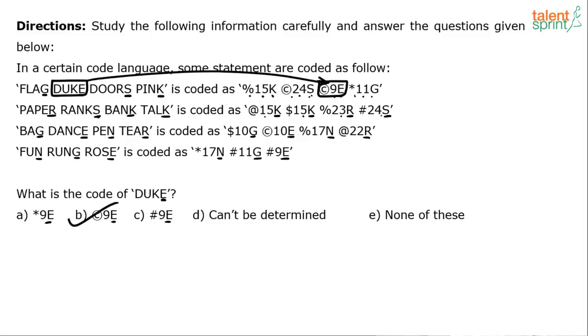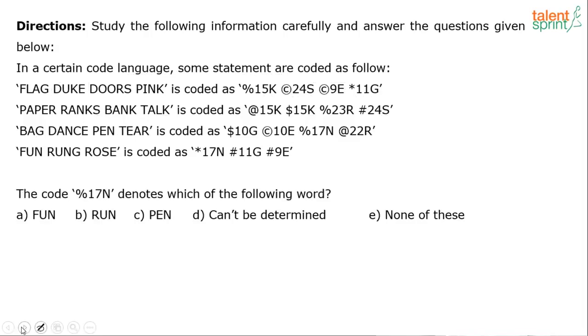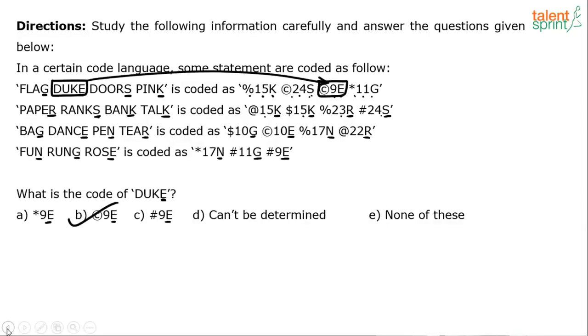Let's look at the next question. The code percentage 17N denotes which of the following words. Percentage 17N. Now clearly the letter used here is N. So the last letter of the word should be N. Here you see smart options. All the options end with N. So that method will not help.